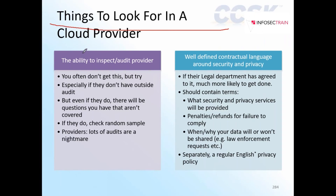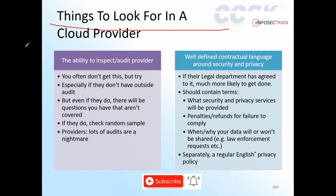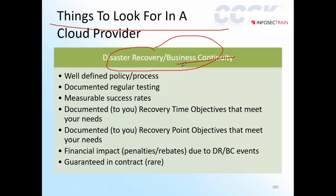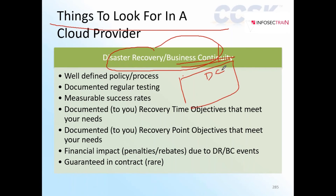For example, the ability to inspect the cloud provider — how much option are they giving you to inspect them? The cloud service provider must have a well-defined policy and processes, and there must be proper documented regular testing from a third party as well. Let's look at success rates, and also business continuity — the ability to continue operations in case of a disaster. For example, I have a primary data center and a backup data center.